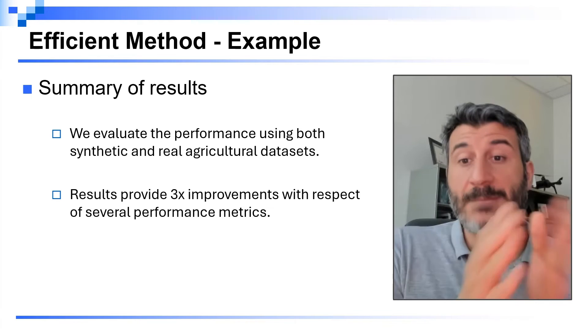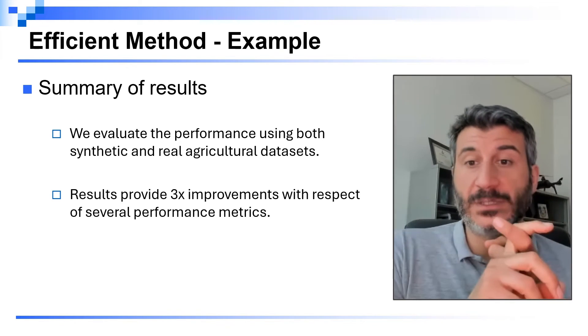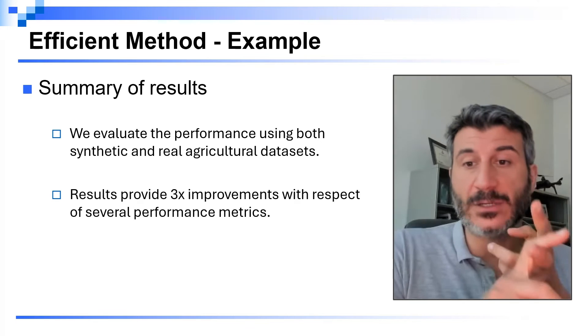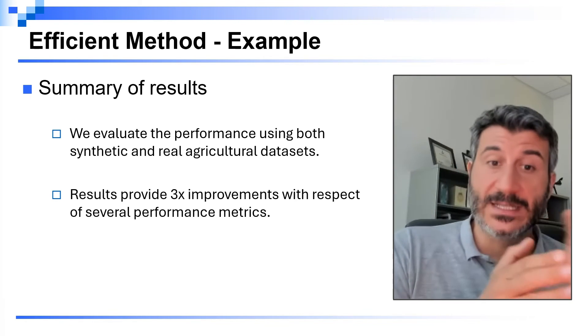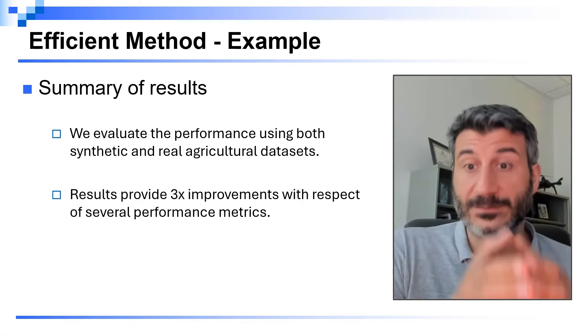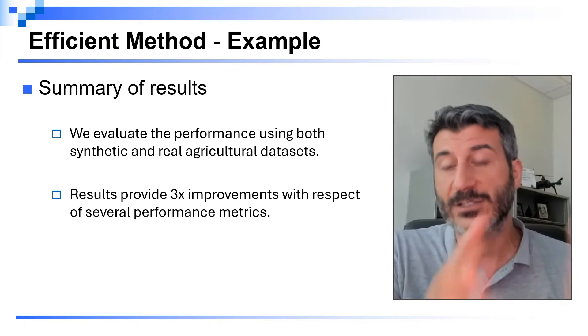Now, you should summarize the results. And here, two things you should mention. The first one is how you did the results, and the second, how the results look like. In this example, we say that we use both synthetic and real agricultural data. And then, the results show a 3x improvement versus state-of-the-art solutions.